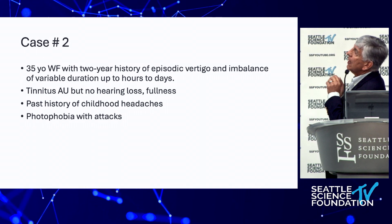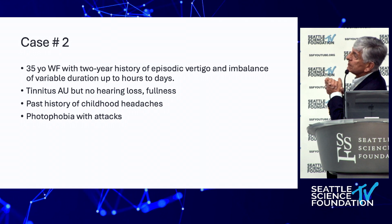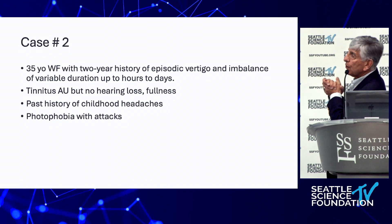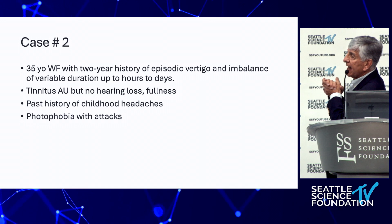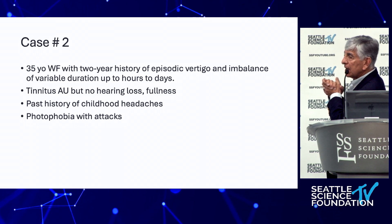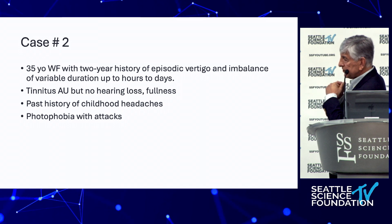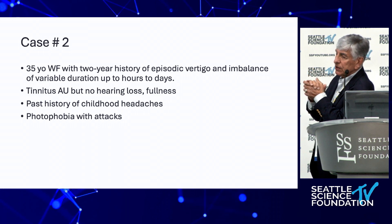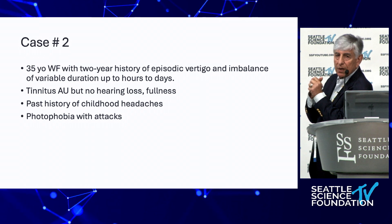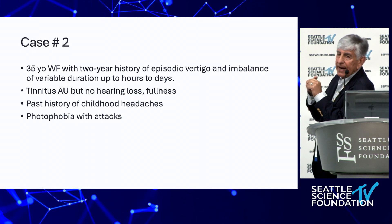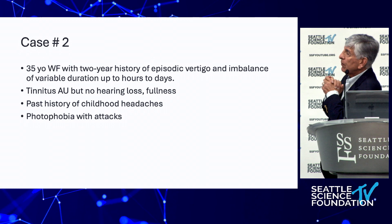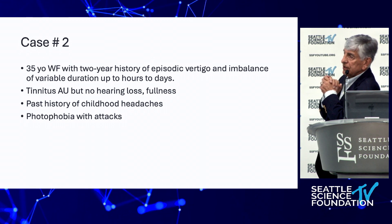Case 2: A 35-year-old with a two-year history of episodic vertigo and imbalance of variable duration — lasting hours to days. She has tinnitus in both ears but no hearing loss, and ear fullness. She had childhood headaches. Vertigo attacks can be triggered by visual stimulation, and before attacks she has a premonition of something weird with her visual acuity — like eye focusing problems. What additional questions would you ask and what do you expect on physical examination?